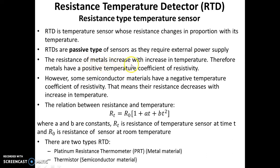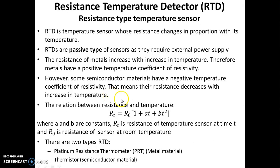The resistance of metals increases with increase in temperature, therefore metals have positive temperature coefficient of resistivity. However, some semiconducting materials have negative temperature coefficient of resistivity, meaning their resistance decreases with increase in temperature. The relation between resistance and temperature is given by RT = R0 × (1 + AT + BT²), where A and B are constants. RT is the resistance of the temperature sensor at temperature T and R0 is the resistance of the sensor at room temperature.